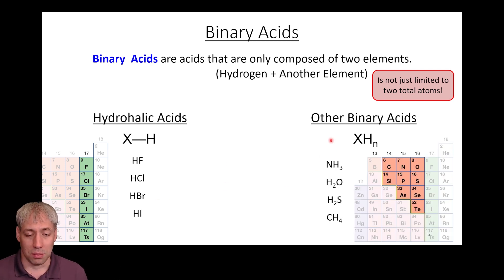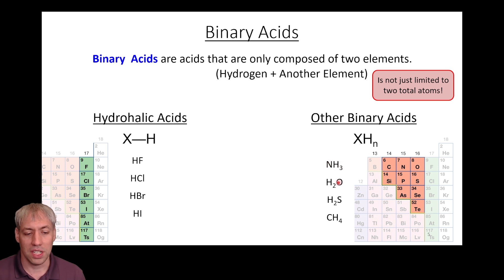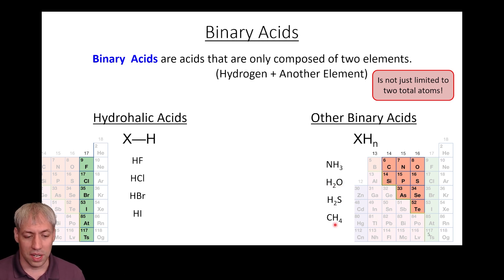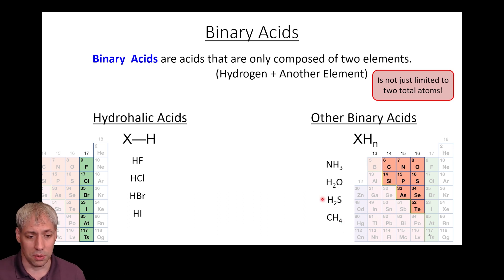Binary acids can have more than two atoms — the definition just requires two types of atoms. NH3 has two types (N and H) but four atoms total. Water is a binary acid with three atoms. H2S, CH4 — even methane qualifies; with a strong enough base you can deprotonate and steal one of those protons. So these are all classified as binary acids.